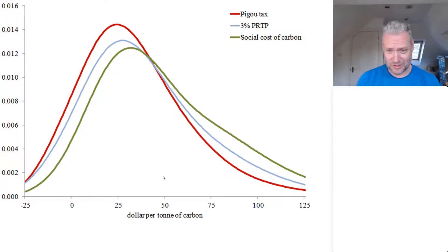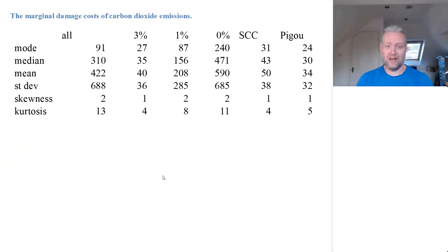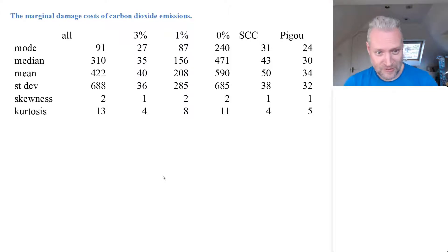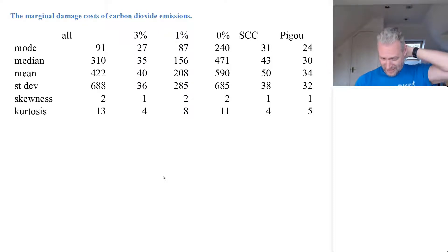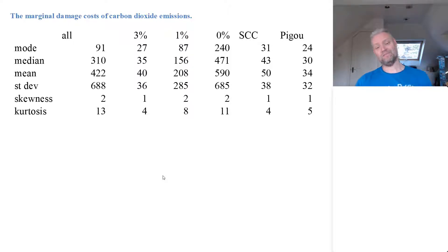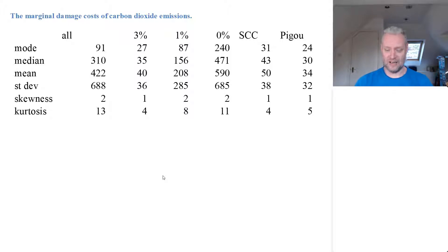The uncertainty is also right-skewed. If you prefer to look at numbers rather than graphs, here we see the same information. For a 3% pure rate of time preference, the mode is 27, the mean is 40, immediately indicating that the mean is greater than the mode — that the right tail is heavier than the left tail. The standard deviation is 36 relative to a mean of 40, so the uncertainty is quite large and the knowledge is reasonably diffuse.